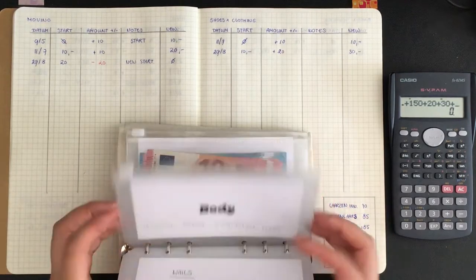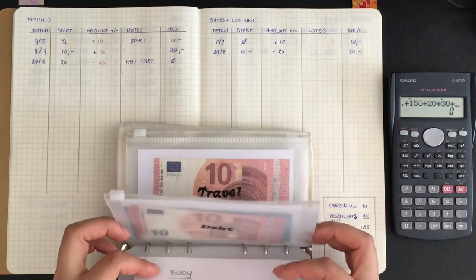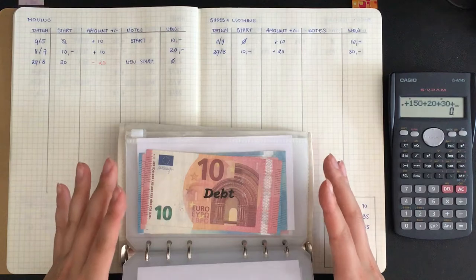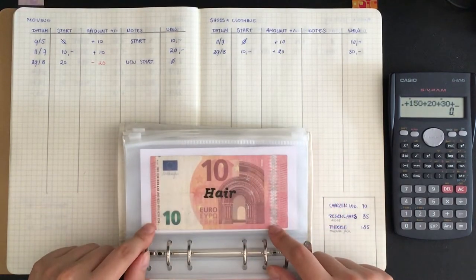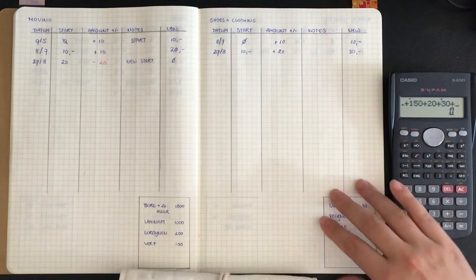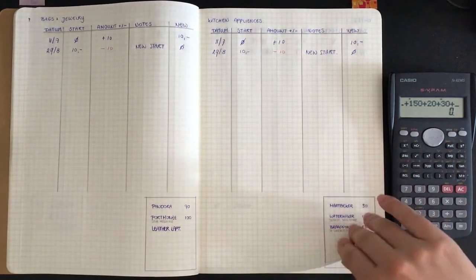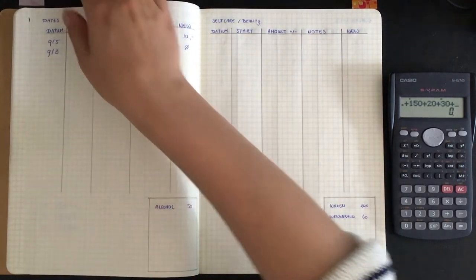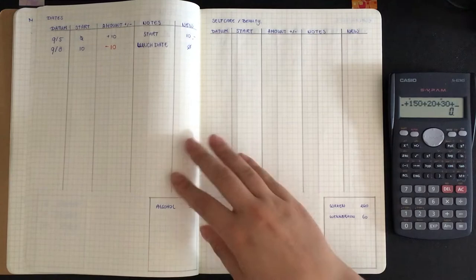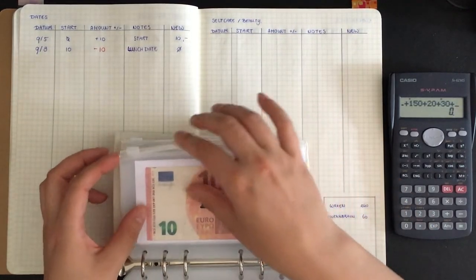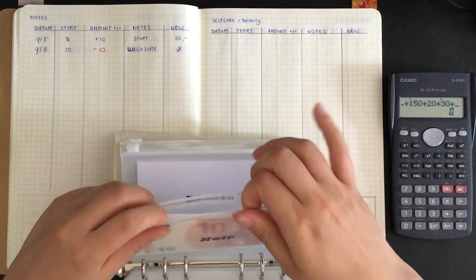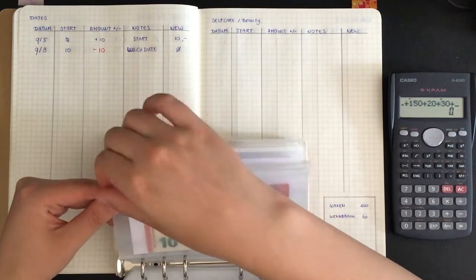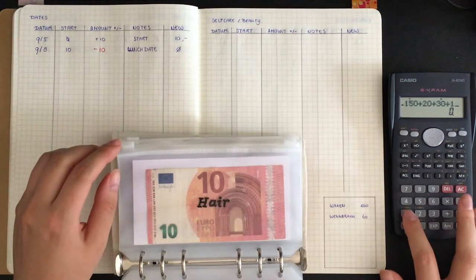And then we have hair, which is the only one left because I don't count debt. Just because debt is technically not my money and I still have to pay that off. So what's left is hair, and this would be self-care for now. But I think, yeah I didn't write that down. So I need to update all my trackers eventually. But for hair we should have 10, which is also in there. So we add another 10.